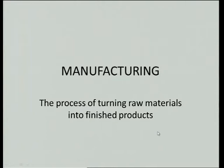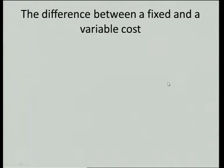Let's go to our PowerPoint and look at manufacturing. Manufacturing — you don't have to write this down — is really the process of turning raw materials into finished products. This whole section covers the fact that you're turning raw materials that you buy into a finished product. So let's look at the first question: the difference between fixed and variable costs.